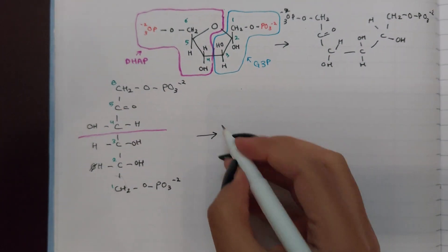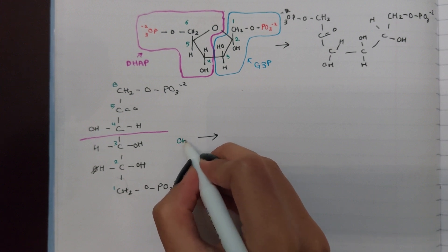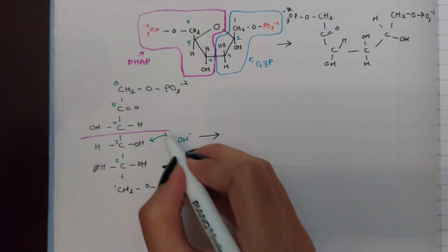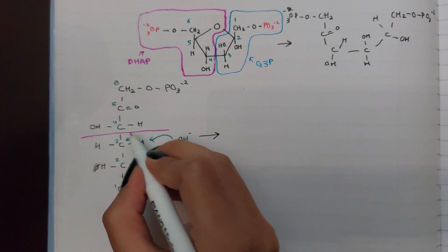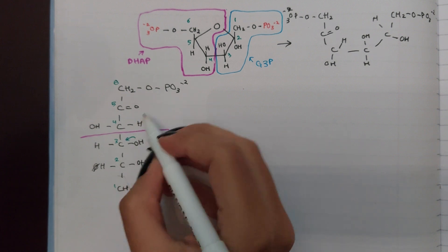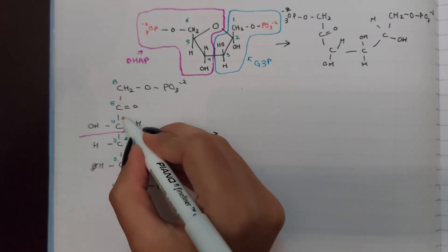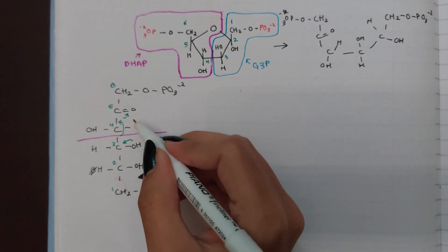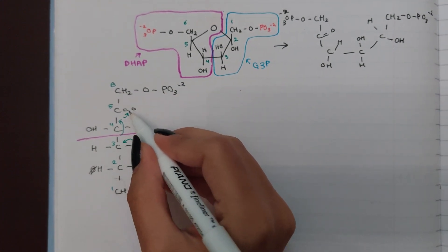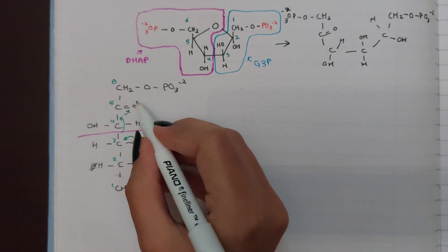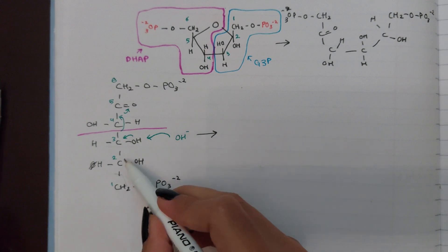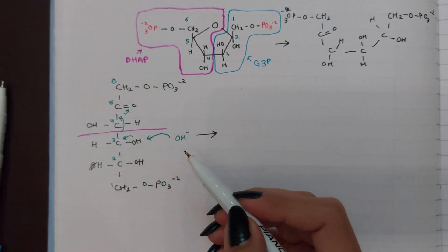So from the aldolase enzyme, OH is added into this compound and the electrons are transferred this way. And the double bond over here is broken, however, due to it being more stable, it turns back into C double bond O. But here we form a double bond that I'll show here.